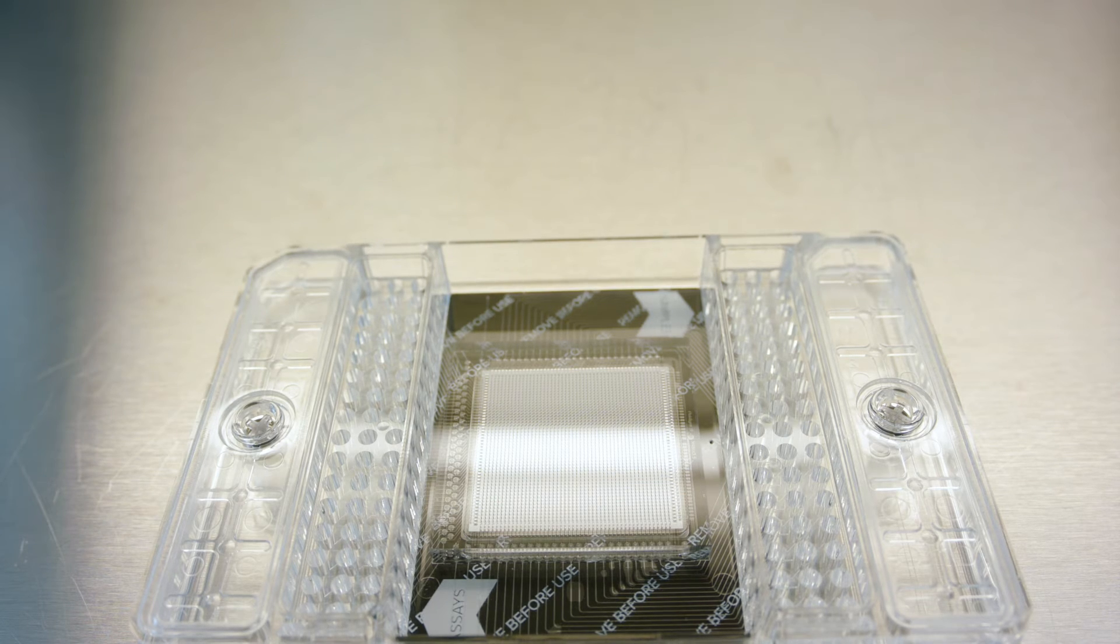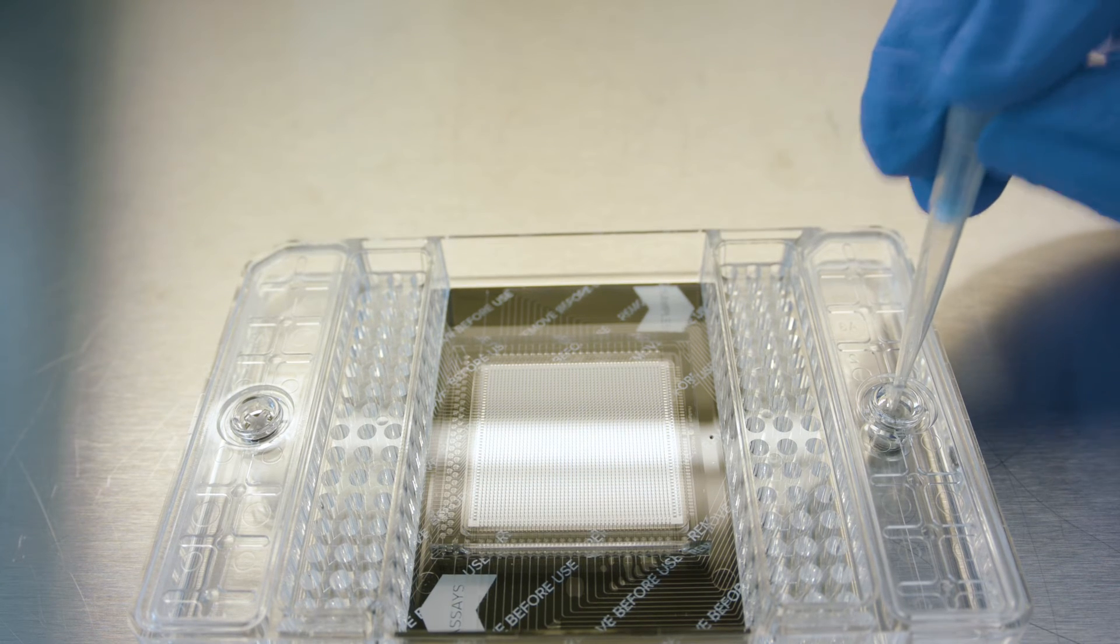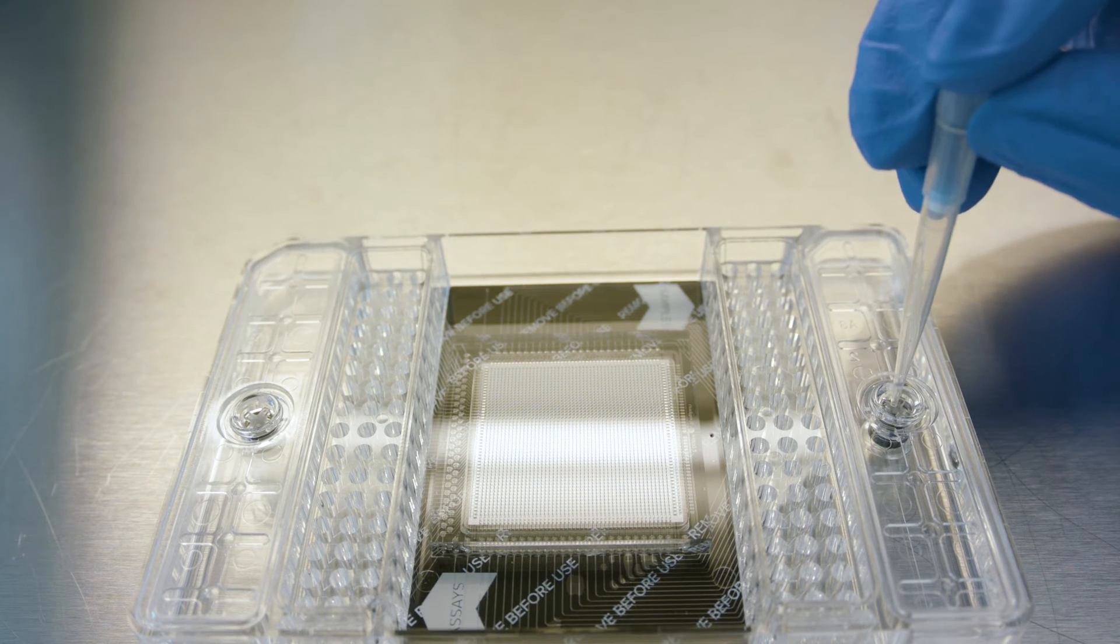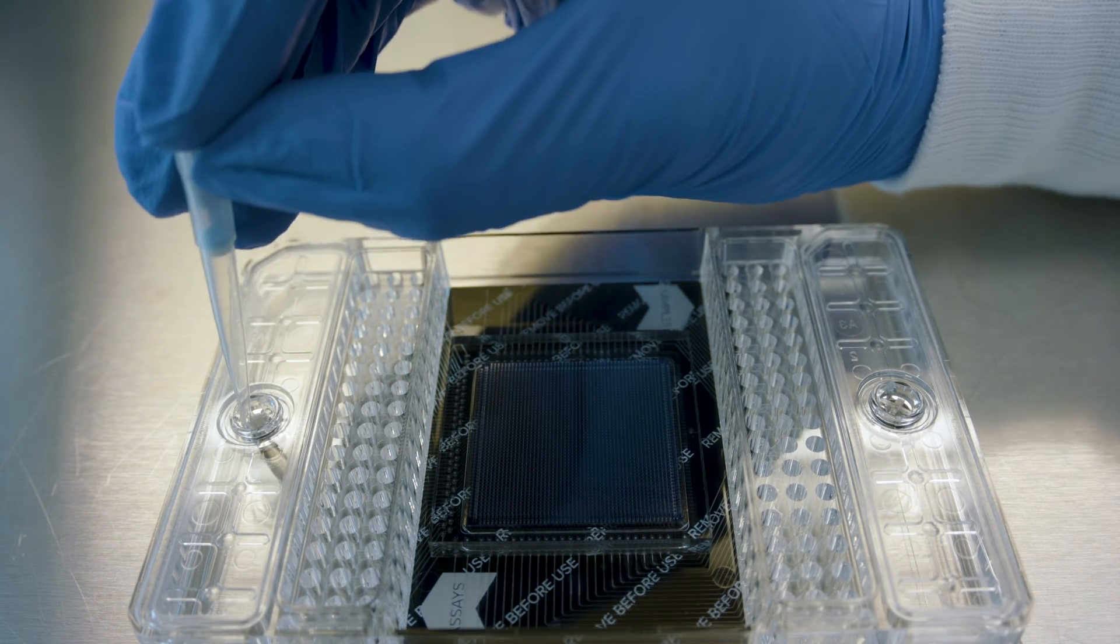Place the IFC on a flat surface, and using a pipette tip, actuate the check valve in each accumulator with gentle pressure. Ensure that the poppet can move freely up and down in the valve.